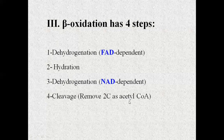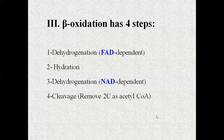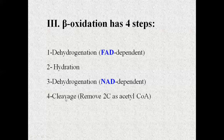Acetyl-CoA forms together with coenzyme A, and then acetyl-CoA is released. The acetyl-CoA enters into the TCA cycle (Krebs cycle), which gives a lot of energy. In the cleavage step, two carbons are prepared and the acetyl group with coenzyme A attached is removed as acetyl-CoA.